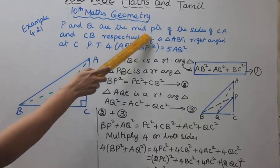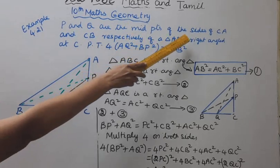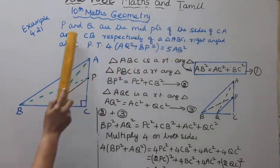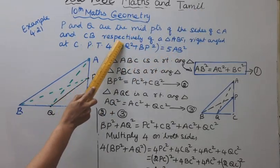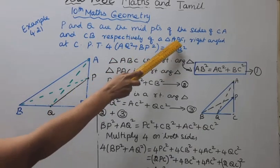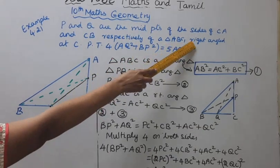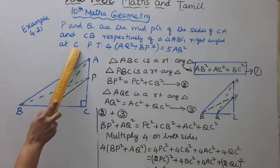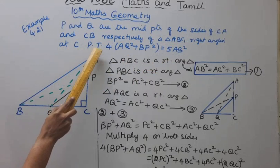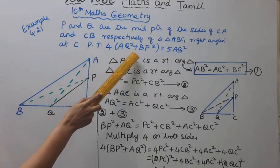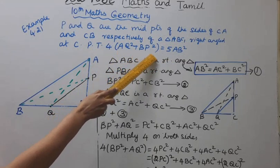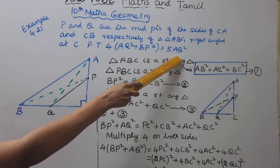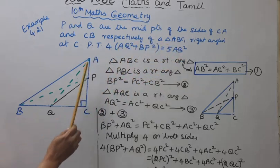P and Q are the midpoints of the sides CA and CB respectively of a triangle ABC, right angle at C. Prove that 4AQ square plus BP square equal to 5AB square.